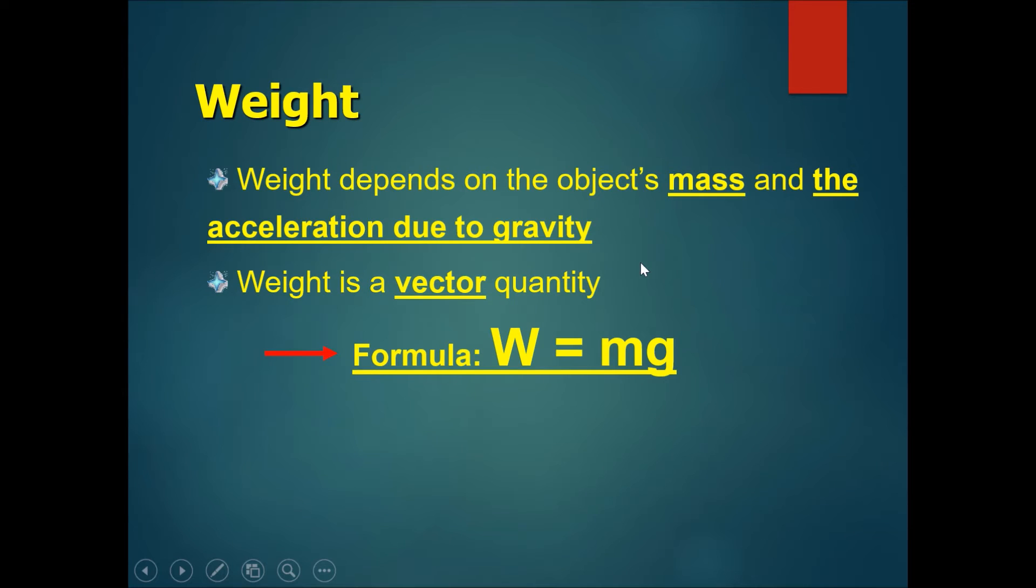Weight depends on the object's mass and also the acceleration due to gravity of the planet which the object is on. And because acceleration is a vector, weight would also be a vector quantity and has a direction. However, the direction of weight is always downwards towards the planet's core.